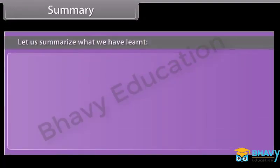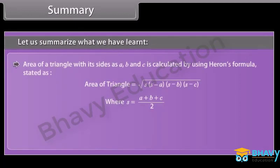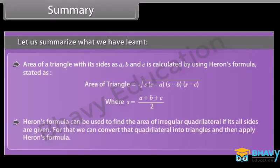Summary: Let us summarize what we have learned. The area of a triangle with its sides as A, B and C is calculated using Heron's formula. Heron's formula can also be used to find the area of an irregular quadrilateral if all its sides are given. For that, we convert the quadrilateral into triangles and then apply Heron's formula.